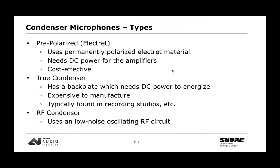The next type is a true condenser — more of a studio-type microphone. These are expensive to manufacture, typically have a gold-sputtered diaphragm and a brass backplate that has to be acoustically drilled, assembled in very clean rooms. They need DC power to bias or energize the backplate. Typically found in recording studios, though in broadcast we do see some used in controlled studio environments. They are very sensitive, accurate, and delicate sounding.